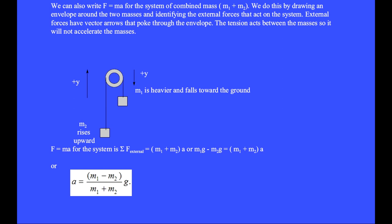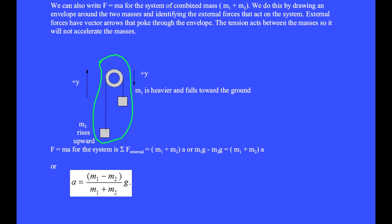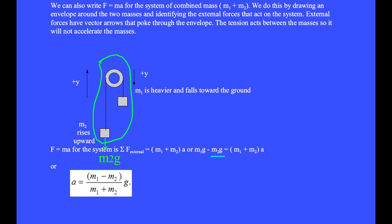We can also write F equals ma for the system of combined mass m1 plus m2 by drawing an envelope around the two masses and identifying external forces. The tension acts between the masses and will not accelerate them. The force arrows that poke across the envelope are positive m1g and negative m2g, giving combined mass times acceleration. Solving: a equals (m1 minus m2) over (m1 plus m2) times g — the same result as before with fewer algebra steps, though it requires careful identification of which forces are external.